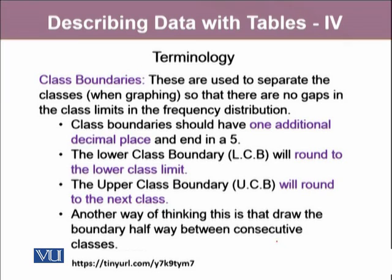Class boundaries should have one additional decimal place and end in a 5. The lower class boundary (LCB) will round to the lower class limit, and the upper class boundary (UCB) will round to the next class. Another way of thinking this is to draw the boundaries halfway between consecutive classes.